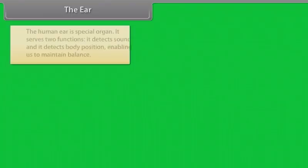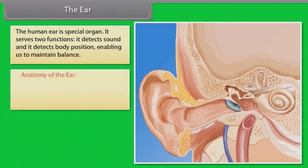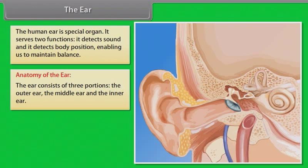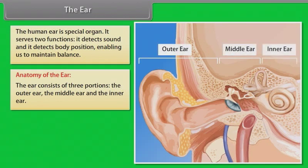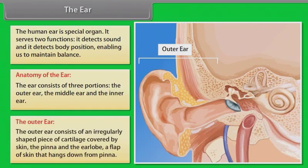The human ear serves two functions: it detects sound and detects body position, enabling us to maintain balance. The ear consists of three portions: the outer ear, the middle ear, and the inner ear. The outer ear consists of an irregularly shaped piece of cartilage covered by skin, called the pinna.